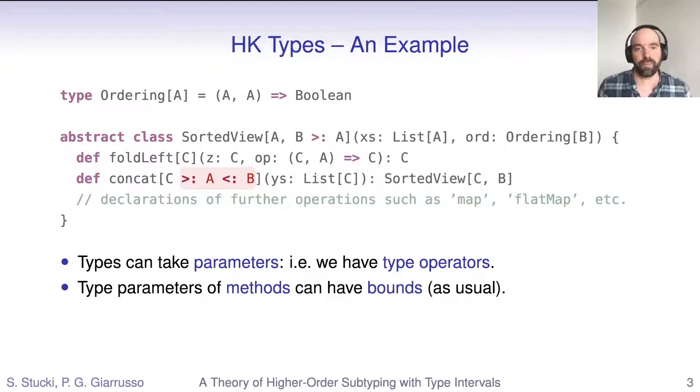Scala methods can take type parameters too, just like functions in other functional programming languages. But Scala implements bounded polymorphism, meaning we can enforce constraints on type parameters in the form of lower and upper bounds. In this particular case, the type parameter C has to be a supertype of A and a subtype of B.